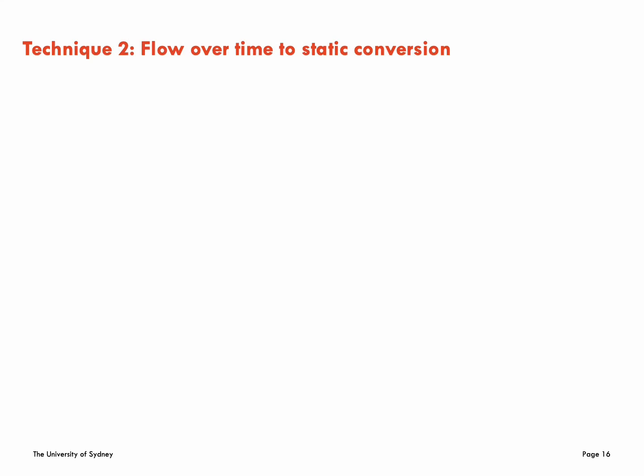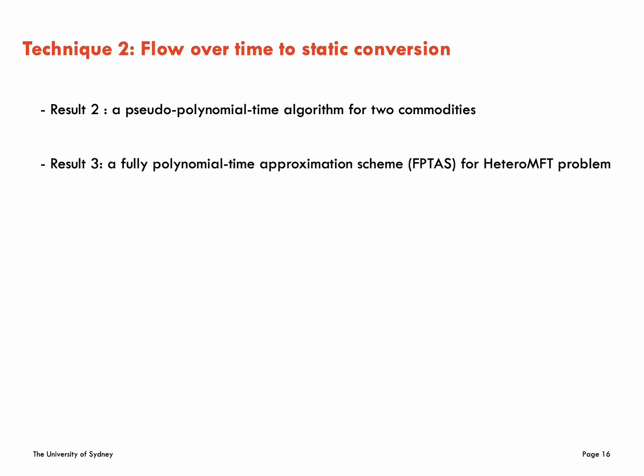Next, we need to tackle the flow over time to static conversion. It's not clear that the averaging technique can be applied to heterogeneous setting in general due to the possible violation of the capacity constraint due to heterogeneity. Interestingly, when the number of commodities is two, a simple argument ensures that the averaging technique still works, but not for three or more commodities. So we have two results for this conversion.